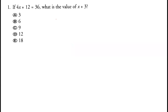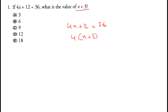Question one: 4x plus 12 equals 36, and we need to find x plus 3. If we take 4 as common, this becomes 4 times (x plus 3) equals 36, so x plus 3 equals 36 divided by 4, which is 9. Option C is correct.